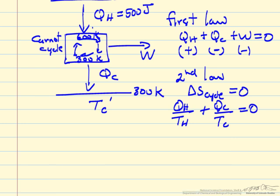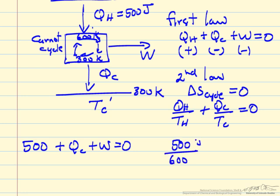And so the first law says 500, and that's positive because we're adding energy, plus QC plus W is zero. The second law says 500 divided by, so this is joules and this is Kelvin, has to be absolute temperature. It doesn't make sense unless we use absolute temperature.